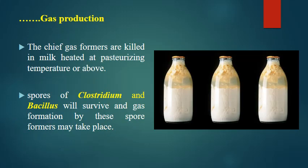The main gas-forming organisms are killed in milk heated at pasteurizing temperature or above. However, spores of Clostridium and Bacillus may survive pasteurization, and gas formation by these spore formers may take place in pasteurized milk.